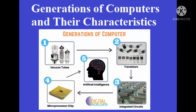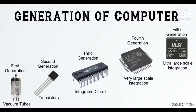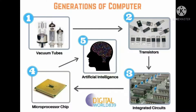Now, this generation overcomes the lack of thinking power because in fifth generation computers, artificial intelligence is used. To summarize the generations of computers: vacuum tube is used in first generation, transistors in second generation, integrated circuit in third generation, microprocessor in fourth generation, and artificial intelligence in fifth generation. These are the main components of each generation of computers.